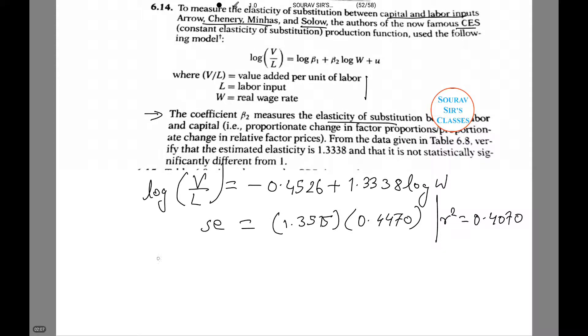We use the t test. T equals 1.3338 minus 1 over 0.4470 which equals 0.7468.